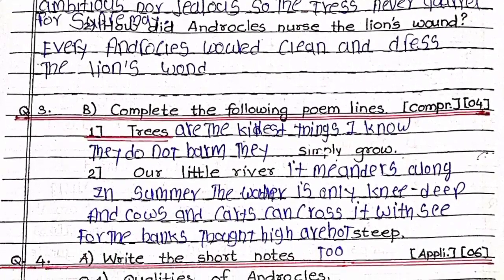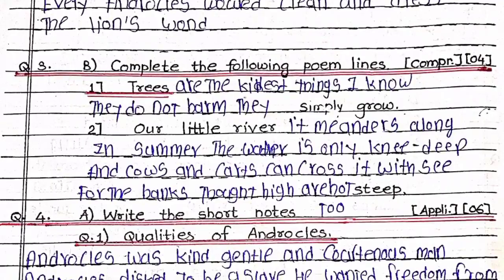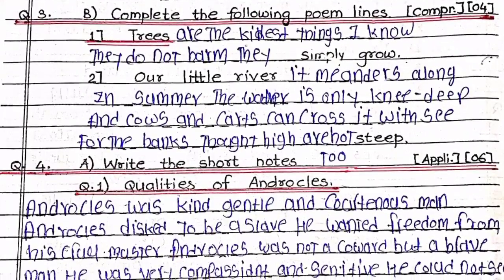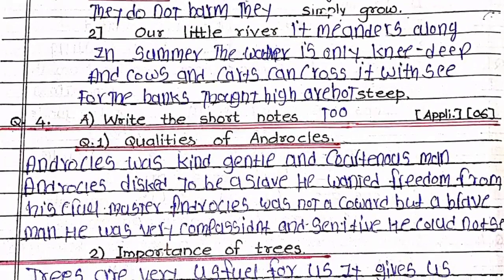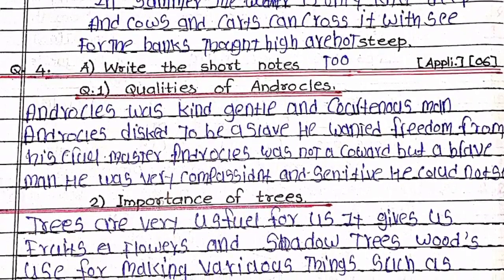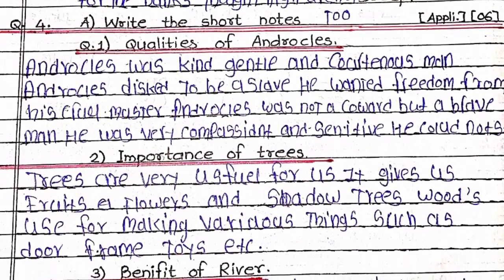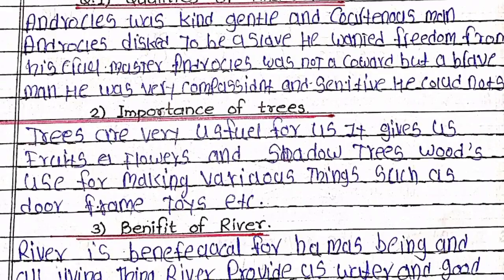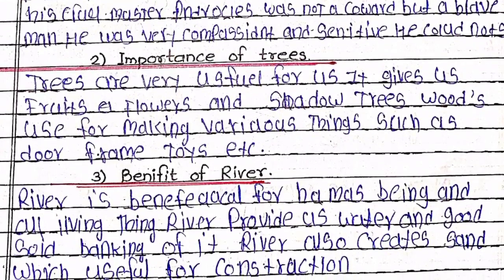Question 4A: Write short notes. First — Qualities of Ambedkar. Second — Importance of trees. Third — Benefits of rivers.